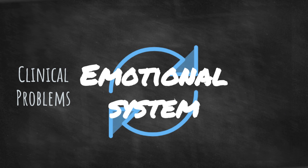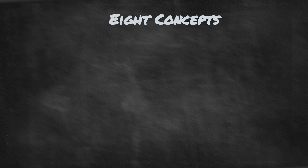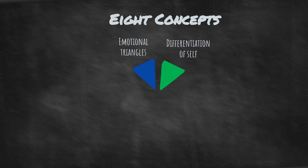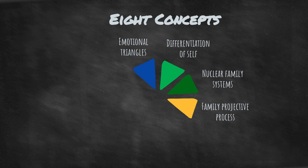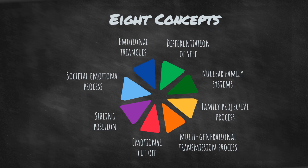Knowledge of how the emotional system operates in one's family, work, and social systems reveals new and more effective options for solving problems. The eight core concepts of Bowen Family Systems Theory are: emotional triangles, differentiation of self, nuclear family systems, family projective process, multigenerational transmission process, emotional cutoff, sibling position, and societal emotional process.